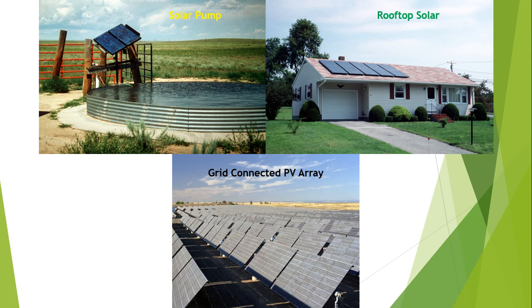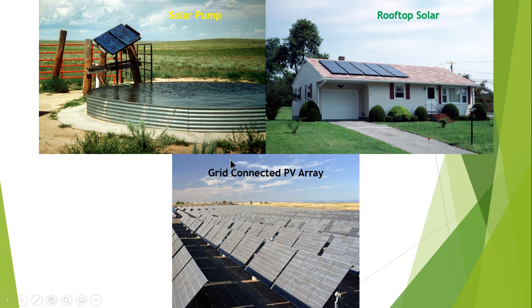These are some examples of solar power generation and their usage. The first panel is connected to a water pump and it is collecting water. The second example shows solar panels installed on a rooftop to meet energy requirements. The third one is a grid-connected photovoltaic array, which might be used for commercial purposes, but again this type of system requires a lot of area.